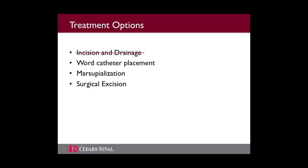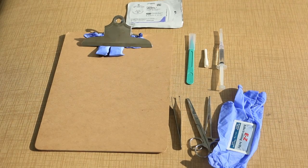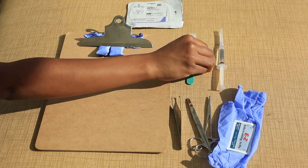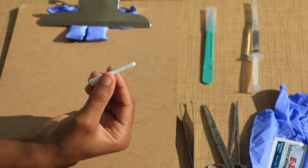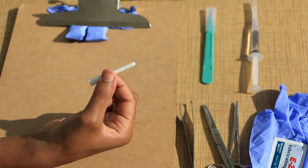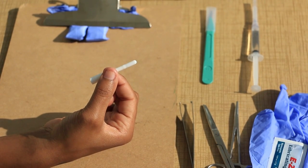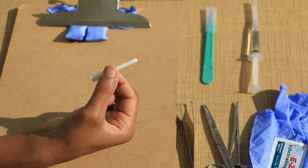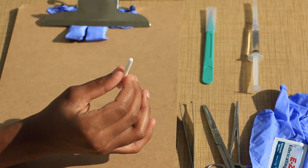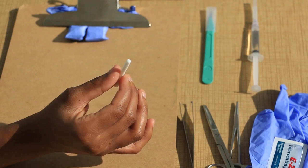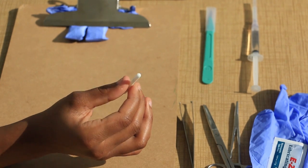The preferred method is incision and word catheter placement. A word catheter is commonly used to treat Bartholin duct cysts and gland abscesses. The stem of this rubber catheter is 1 inch long and the diameter of a No. 10 French Foley catheter. The small inflatable balloon tip of the word catheter can hold about 3 mL of saline.